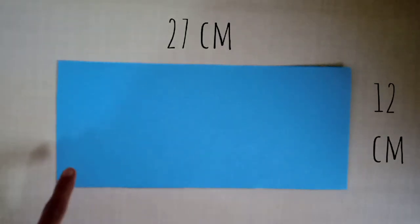So for making this vase, you'll need an A4 size sheet. I'll cut it into the size of 27 by 12 cm.